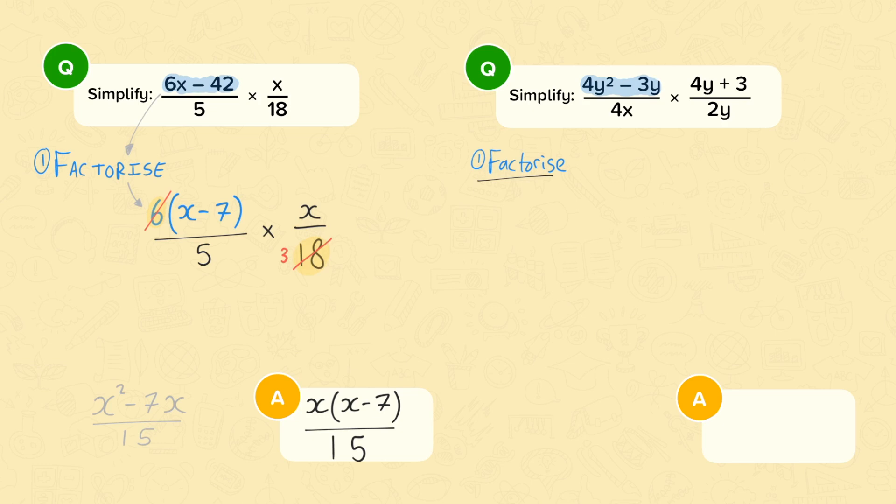Then, you can cancel out those common factors. Another hint, you'll be cancelling out a letter. Also, the difference between two squares will crop up at some point. Pause the video and see how you do. When you come back, I'll show you my working out and talk you through it. Pause the video now.